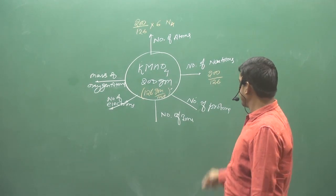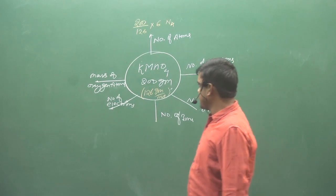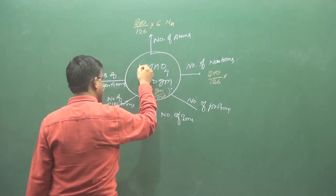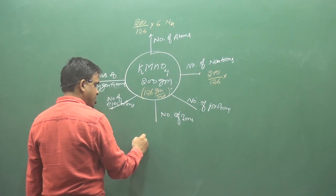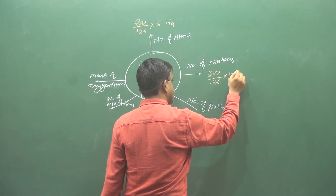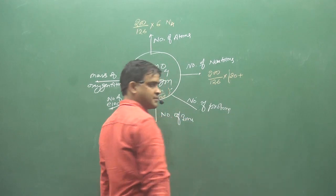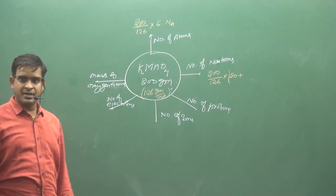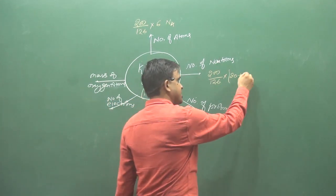Neutrons, now we have to remove neutrons. How much is it in the potassium? Neutrons, potassium? 20. Plus Mn, 30.